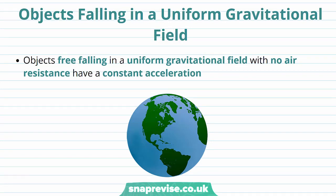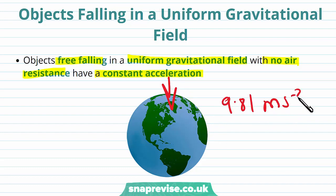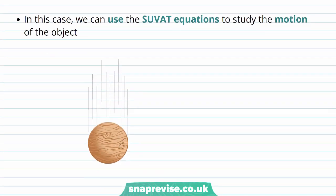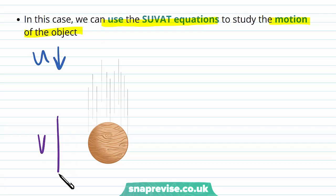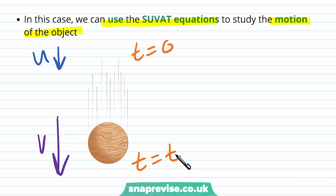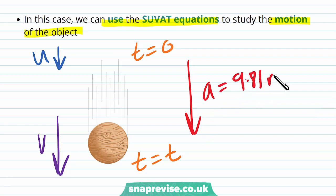The next example is objects falling in a uniform gravitational field. Objects free falling in a uniform gravitational field with no air resistance have a constant acceleration equal to 9.81 metres per second squared, which is the gravitational acceleration g. We will go into more detail in the freefall video later on. Because we have constant acceleration equal to 9.81 m/s², we can use the SUVAT equations. The object has initial velocity u and final velocity v, starts at t = 0, and accelerates over a displacement s.